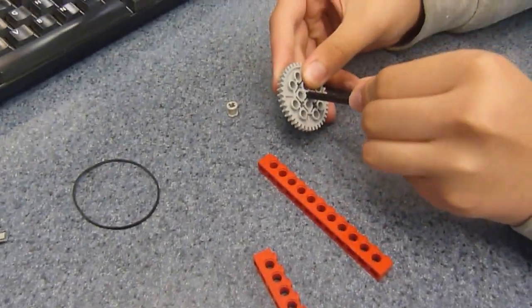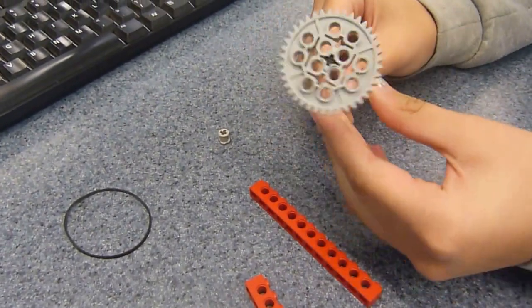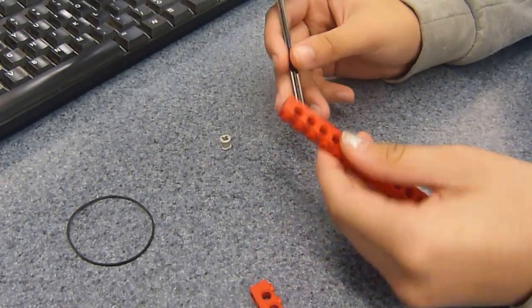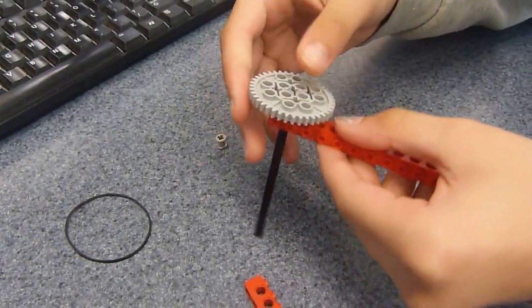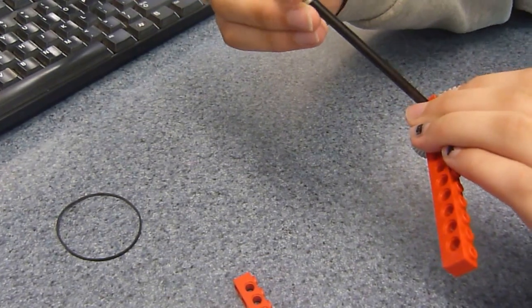The first step is you take the 12 stud and the 40 tooth gear and put it right in the middle. Then you take the 1x12 piece and connect it like that.